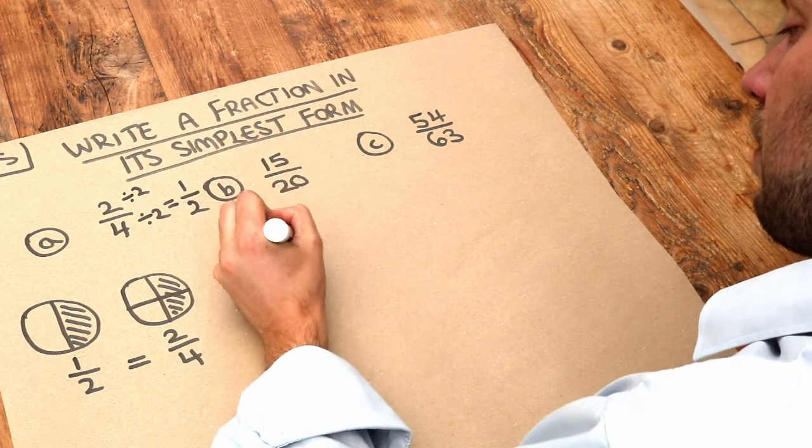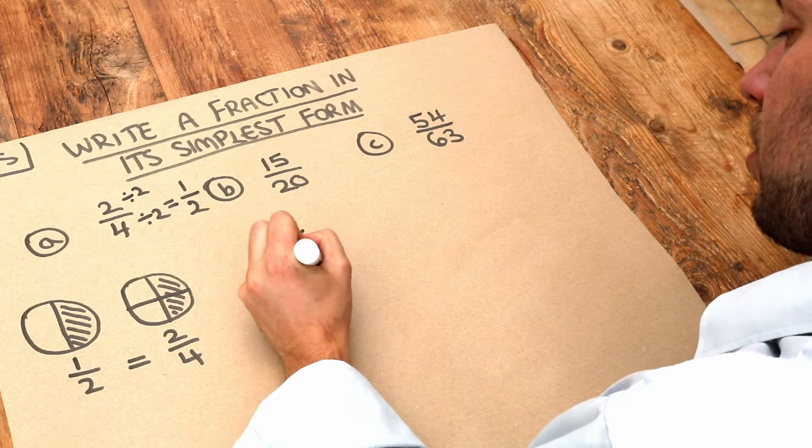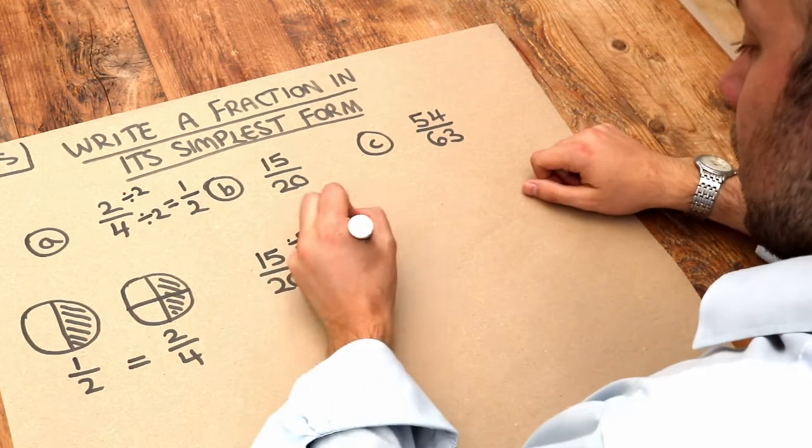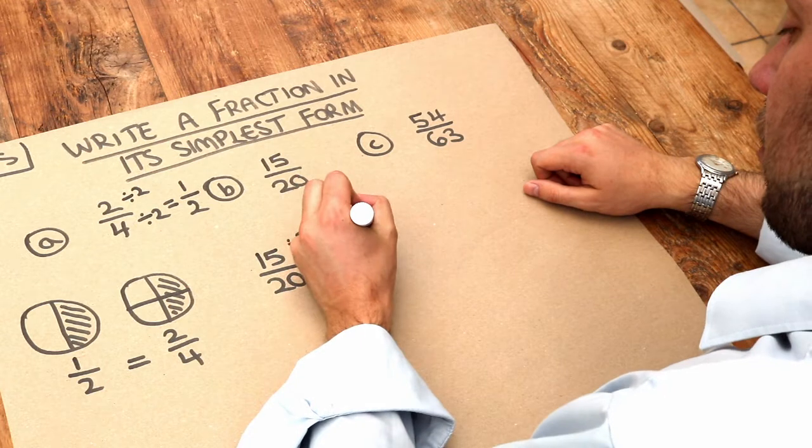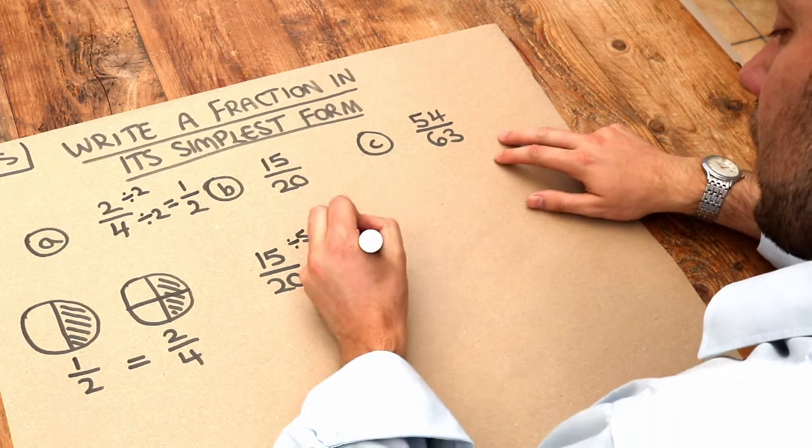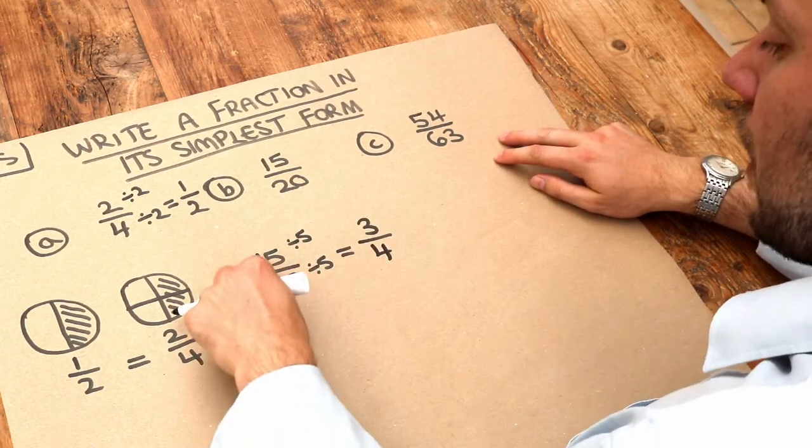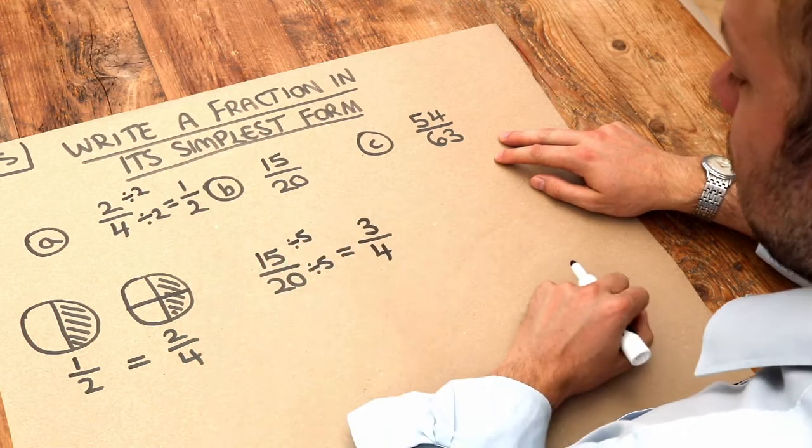Now 5 is a factor of 15 and 5 is a factor of 20. So if I write divide by 5 at the top and the bottom, then 15 divided by 5 is 3 and 20 divided by 5 is 4. So 15 over 20 in its simplest form is 3 quarters.